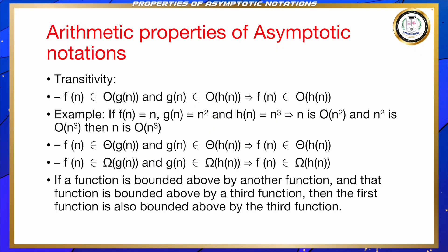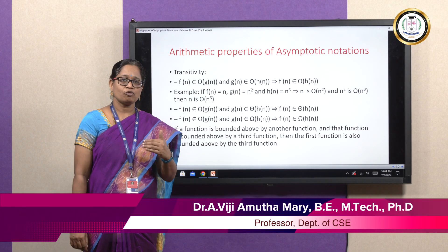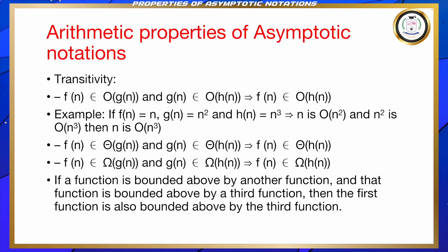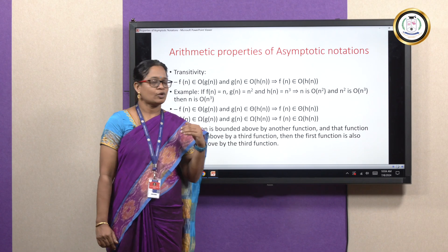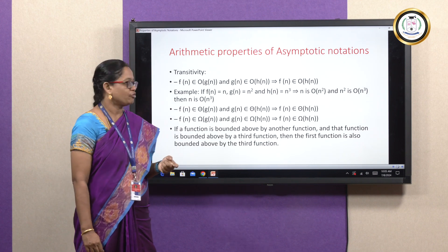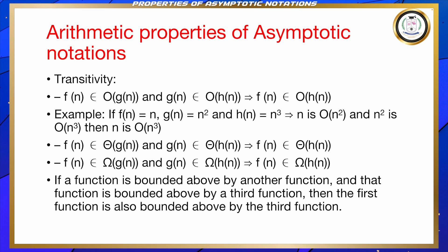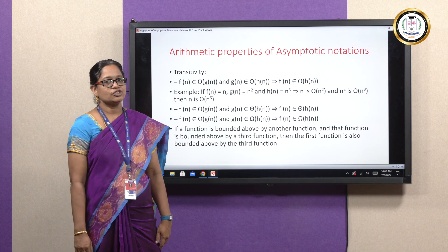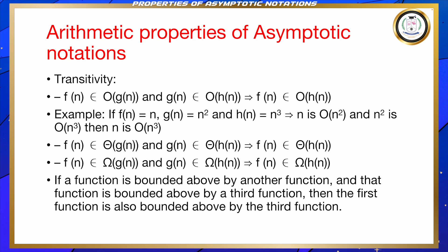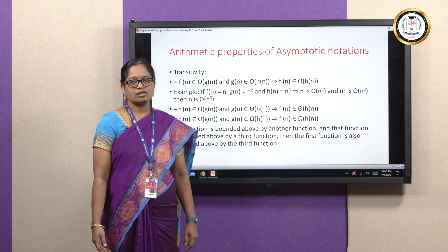The first property defined here is transitivity. This property says that if a function is bounded above by another function and that function is bounded above by a third function, then the first function is also bounded by the third function. Symbolically: if f(n) belongs to O(g(n)) and g(n) belongs to O(h(n)), then f(n) belongs to O(h(n)). For example, if f(n)=n, g(n)=n², and h(n)=n³, then n is O(n²), n² is O(n³), and therefore n is O(n³).